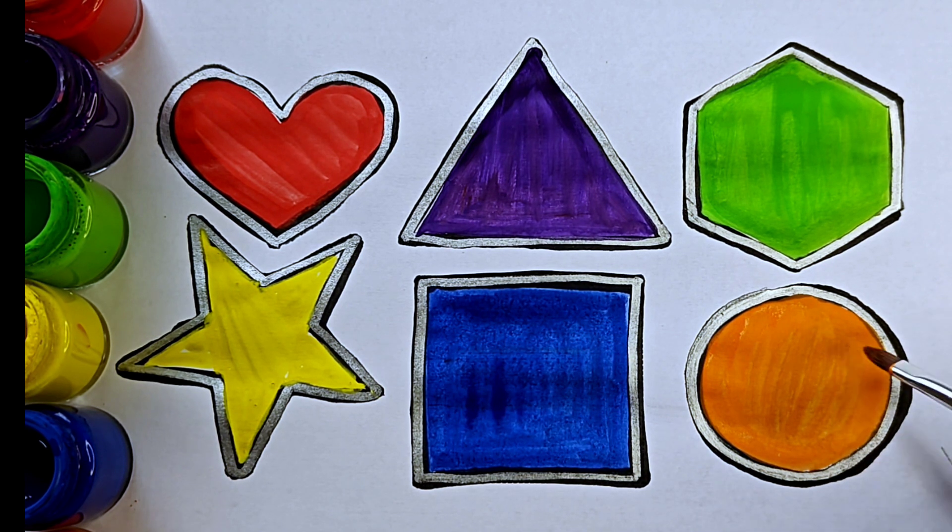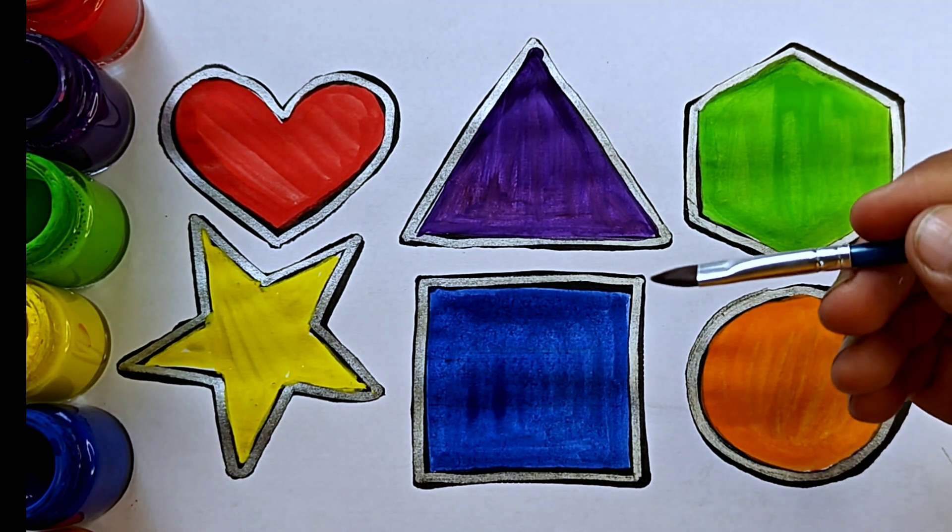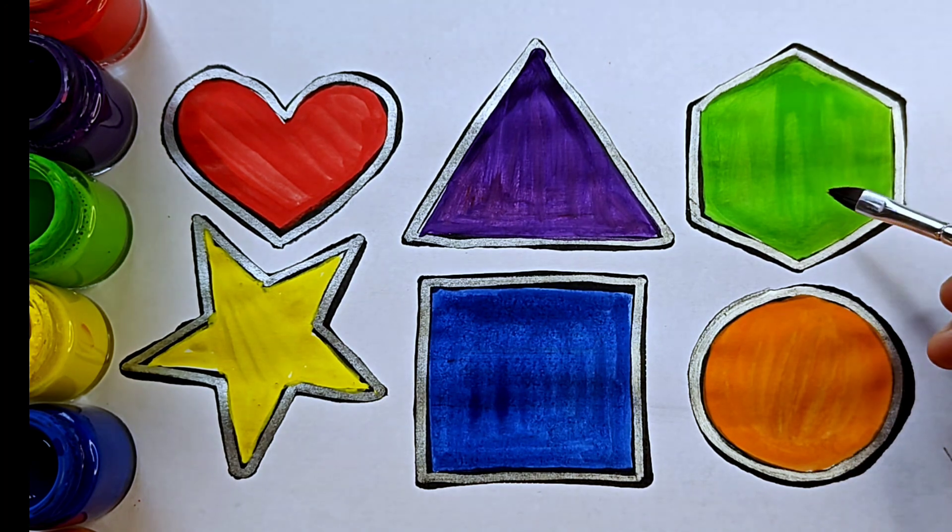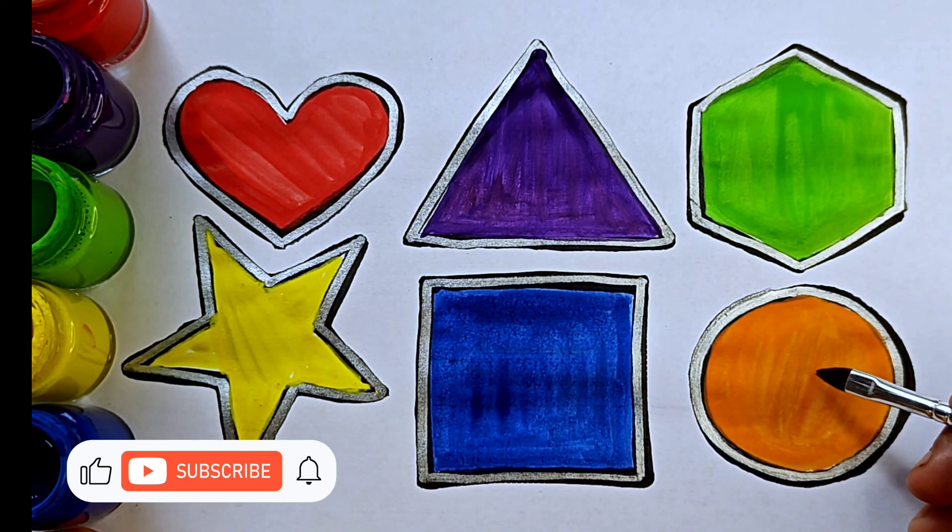This shape is circle. It has no sides. It is a 2D shape. Let us recall the shape's name once again. This is heart, equilateral triangle, hexagon, five pointed star, square, circle.